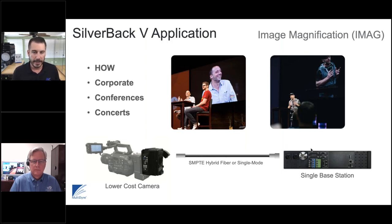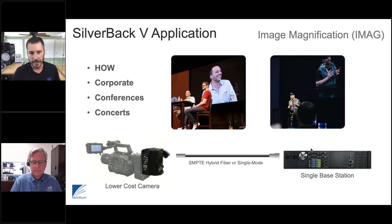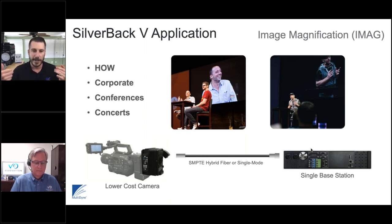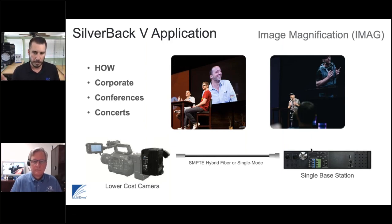Image magnification — I-Mag — is a popular workflow for house of worship and corporate events. The spectator wants to see lips move in sync, so latency is key. We don't add any additional latency with this system. You can use a lower-cost camera with just the connectivity you need — video to the base station, ethernet, and maybe intercom — without populating additional features at build time. There's also a single base station version. We cover many different market segments with this one scalable platform.